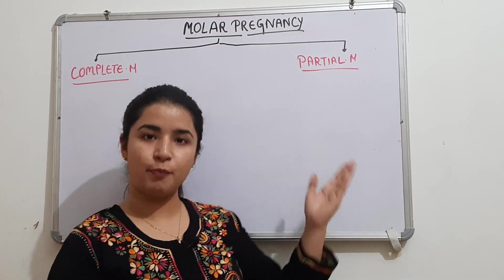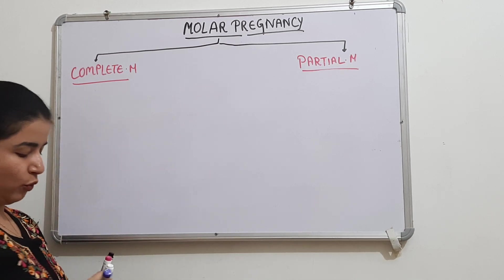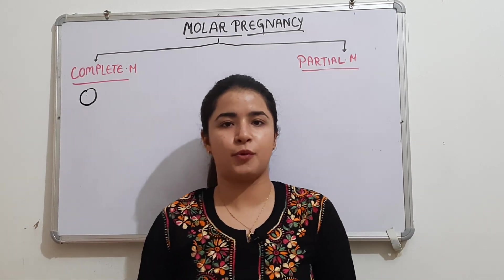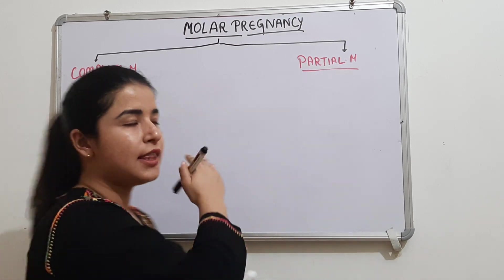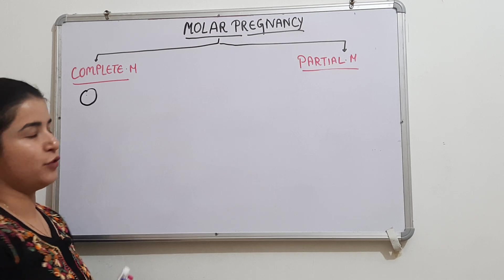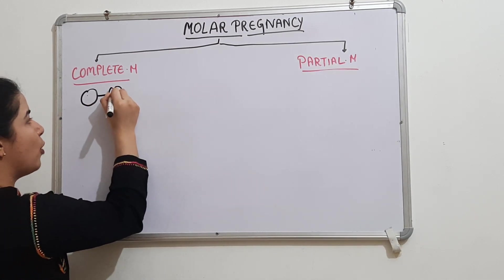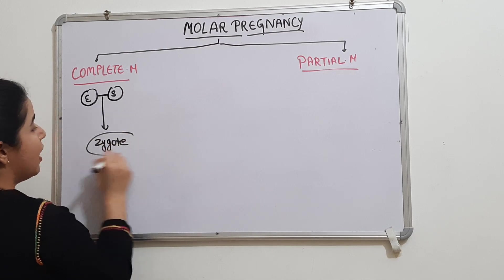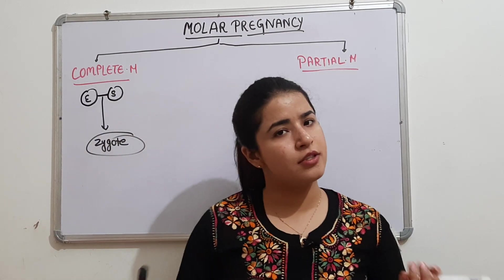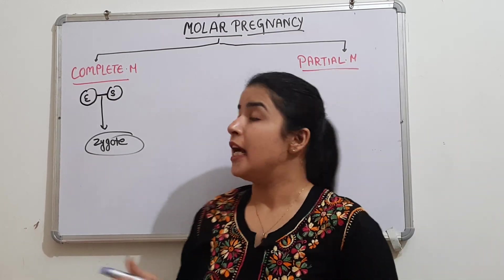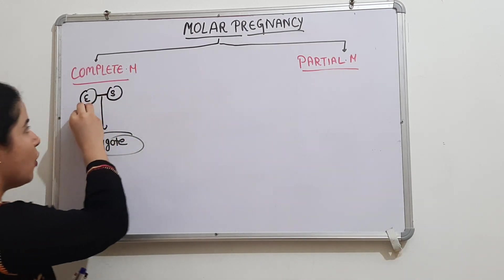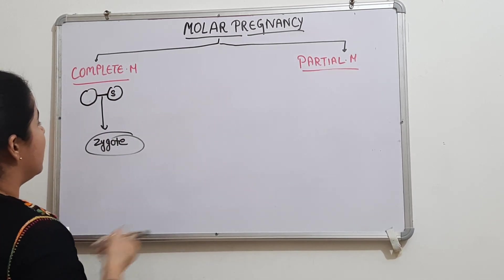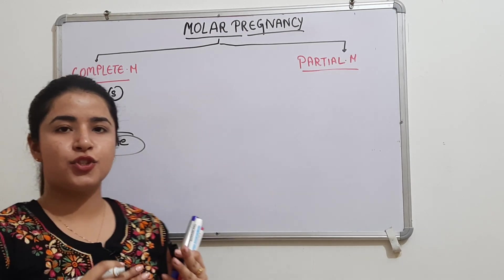Molar pregnancy is divided into two types: complete mole and partial mole. In a complete mole, the process begins like normal fertilization — an egg fuses with a sperm to form a zygote. However, the main problem is that this egg is without a nucleus, so there is no genetic material from the egg side.